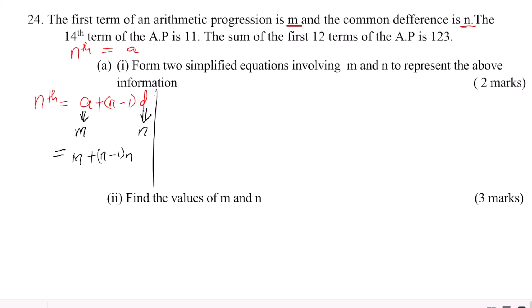Now having these, we can go to the next statement: the 14th term of the AP is 11. The 14th term will be given by M (which replaces A in this question), plus, since it is the 14th term, N equals 14, so we have 14 minus 1 times the common difference N. Therefore, the 14th term equals M plus 13N, and this is equal to 11. This is the first equation.